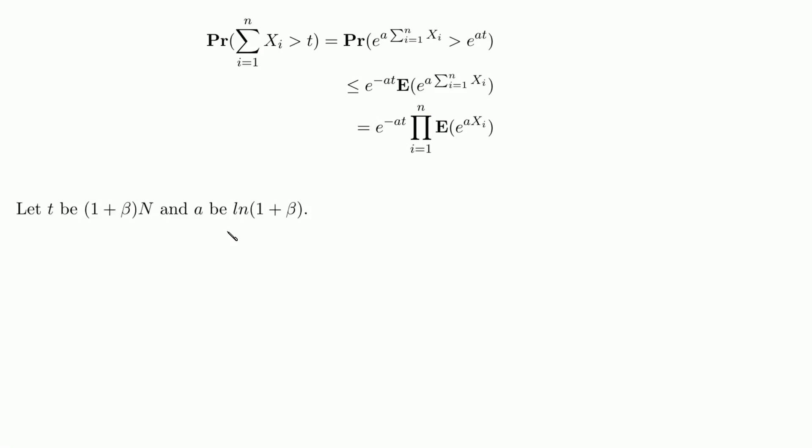So now that we have this form, we will plug in one plus beta times the expected value for t. And we will plug in the natural logarithm of 1 plus beta for a.